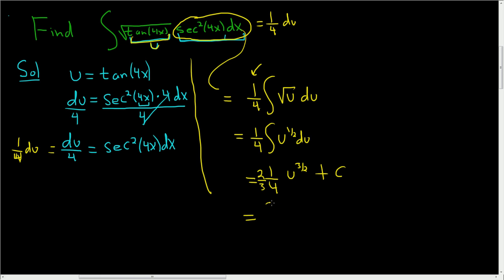This is equal to, let's see, 2 over 12. And u was the tangent of 4x, so it's the tangent to the 3 halves of 4x plus c. Are we done? No way, no way. 2 over 12 is 1 over 6. Don't forget that part. That would be a shame to do all that hard work and forget to simplify. 2 over 12 is equal to 1 6th. And that's the answer.